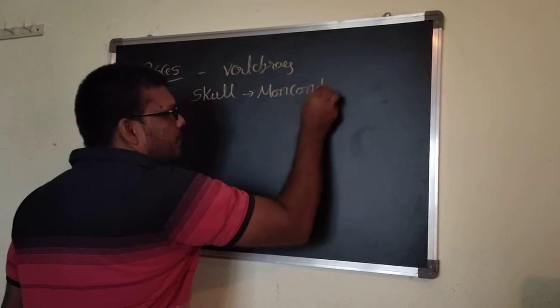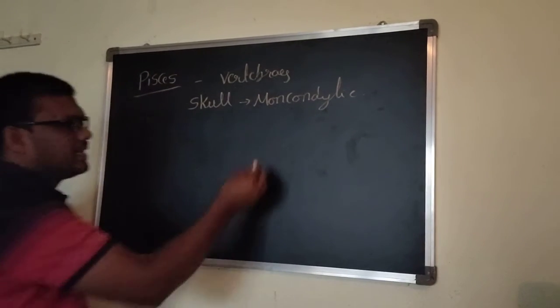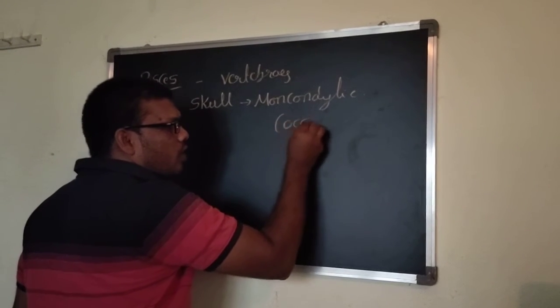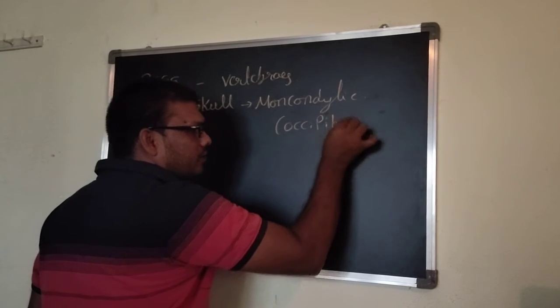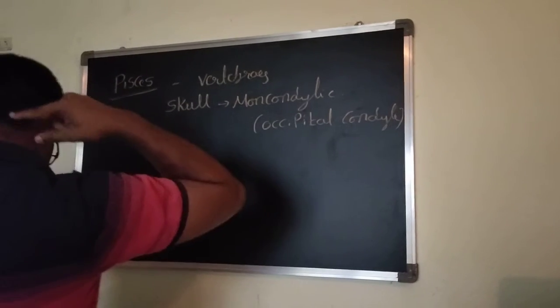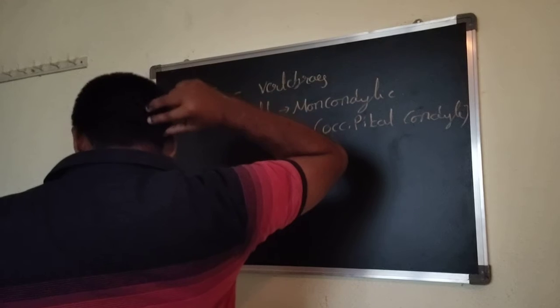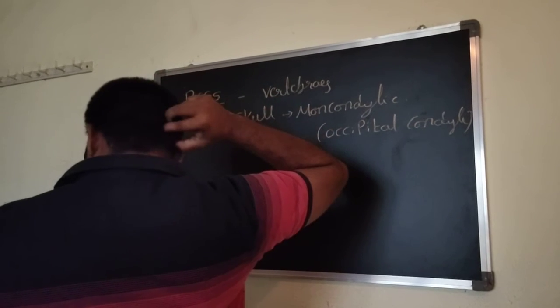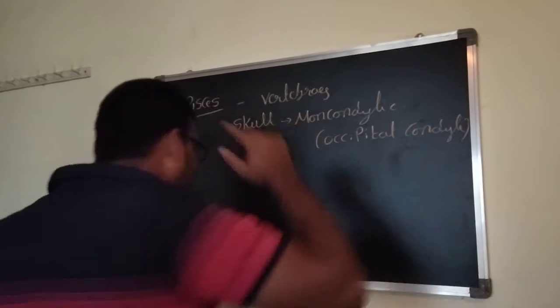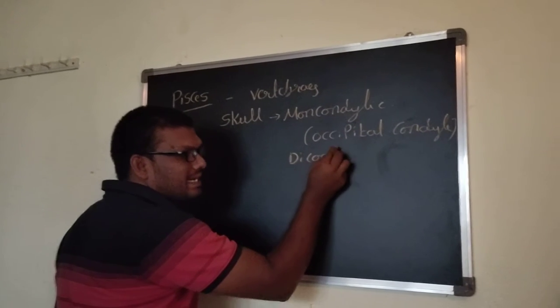What is meant by monocondylic type of skull? It means they have only one occipital condyle. See, this part is called the condyle part. For us, two occipital condyles are present. That's why our skull is called a dicondylic skull.